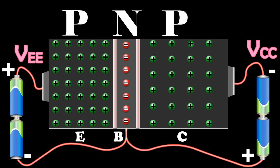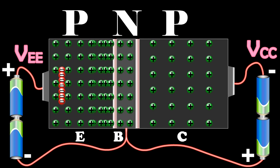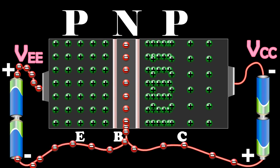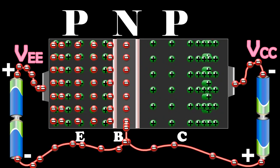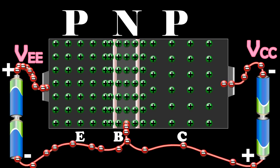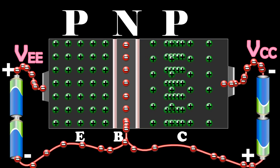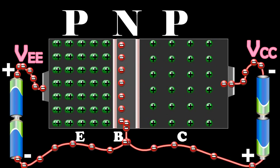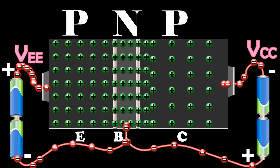Since the emitter-base junction is forward biased, a large number of holes cross the junction and enter the base. At the same time, very few electrons flow from the base to the emitter. These electrons, when they reach the emitter, recombine with an equal number of holes in the emitter. The loss of total number of holes in the emitter is made up by the flow of an equal number of electrons from the emitter to the positive terminal of the battery.